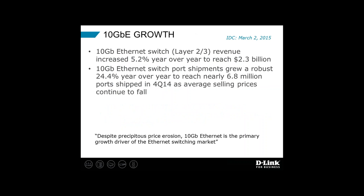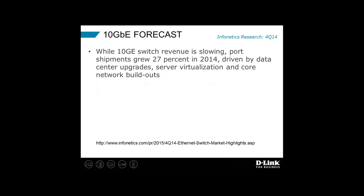Let's look at some industry data. IDC put out a press release showing that 10 gig Ethernet switching revenue last year increased a little over five percent year over year worldwide, while port shipments grew almost 25 percent year over year. That disparity — 25 percent port shipments versus five percent revenue growth — leads me to believe we have price erosion; prices are coming down. Nevertheless, the market continues to grow. Infinetics data for a particular quarter showed revenue on 10 gig Ethernet was slowing, but port shipments had grown 27 percent, driven by data center upgrades, server virtualization, and core network buildouts.